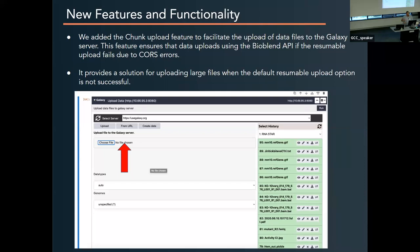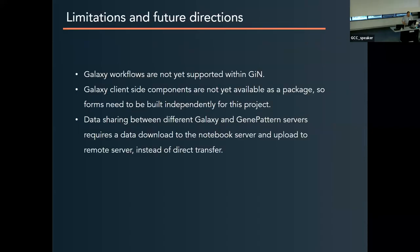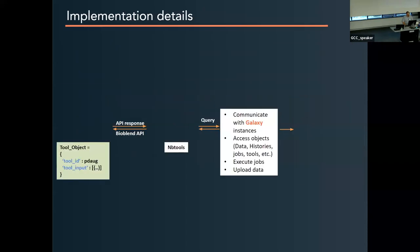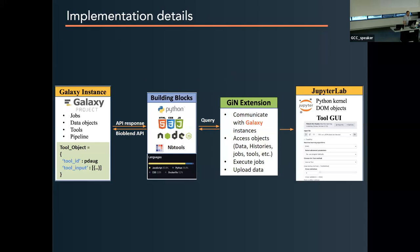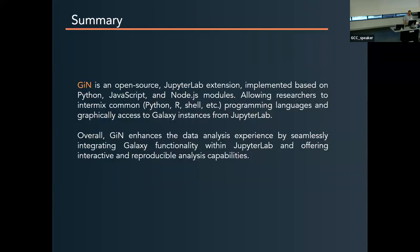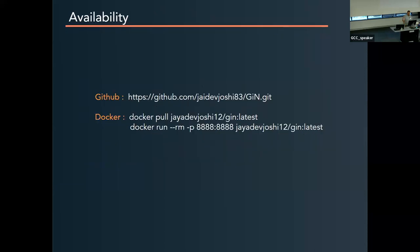With uploading, you can upload files from your own computer or send them from the Jupyter server itself. When you upload from your computer, it will attempt to use a chunked upload based on the Tus interface. If that fails — for example due to CORS — it'll send the file first to the Jupyter server and then directly to the Galaxy server. Some implementation details: we need a Galaxy server, we're using Python and Node.js, it's built on top of a package called nbtools, it's a standalone extension you can install from PyPI, and it's available on GitHub and Docker.